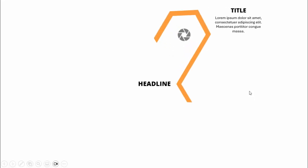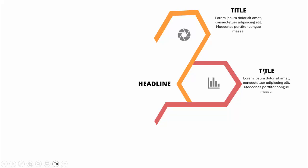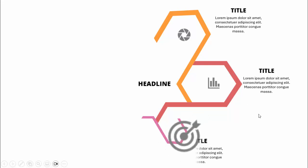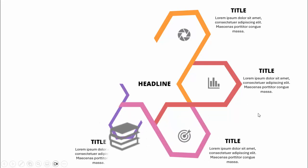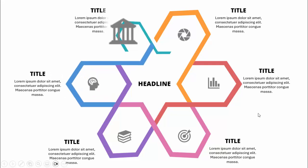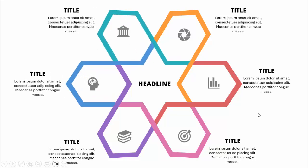In today's tutorial I'm going to show you how to create a six-options infographic slide in PowerPoint. The slide has a headline in the center, and when you click it shows the first option with an icon, a title, and detail text. Clicking again reveals option two with a different color combination, then options three, four, five, and six — giving it a geometric design.